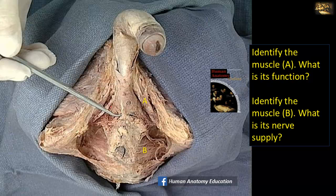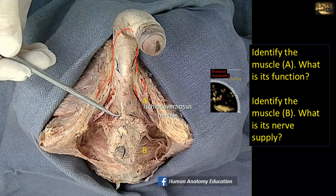Identify muscle A. What is its function? This is a dissection of the superficial perineal pouch of a male. On the lateral side, the structure is the crus of the penis. There is a crus on each side, and the two crura continue forward as the corpus cavernosum. The crus at the root of the penis is covered by skeletal muscle fibers called the ischiocavernosus muscle. This muscle contracts during erection and helps maintain erection.